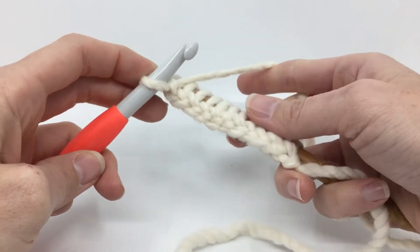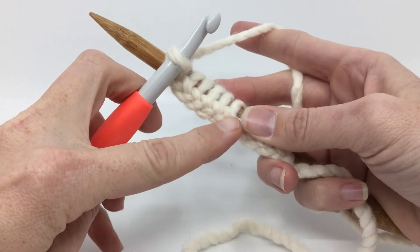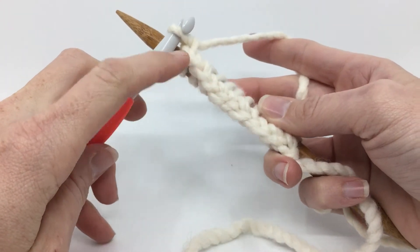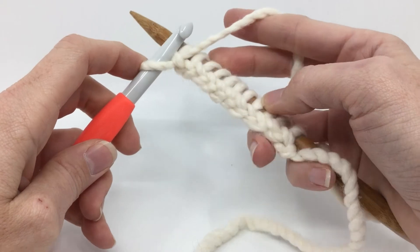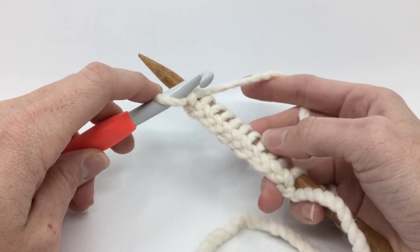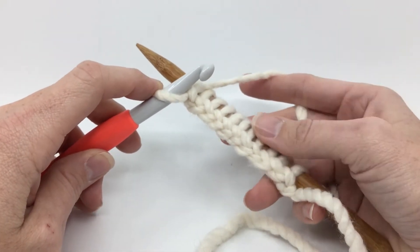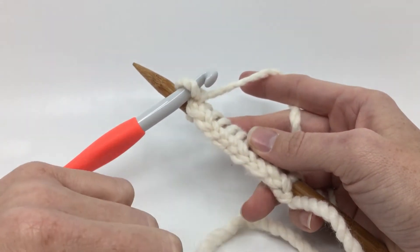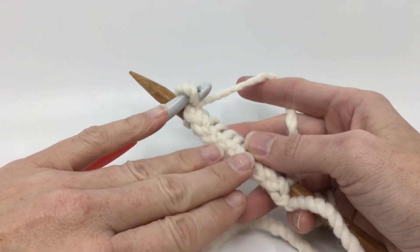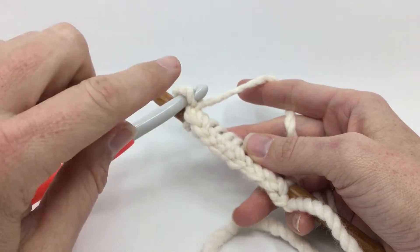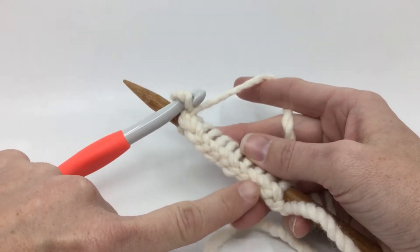The second reason is look at the bottom of this. This is your edge. So when you have a project where you're not going to be sewing or you're not going to put like fringe, say that this was a scarf. If you're not going to be attaching fringe to the bottom or doing anything to your edge, this is a really nice edge.